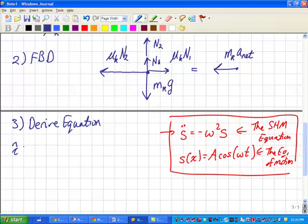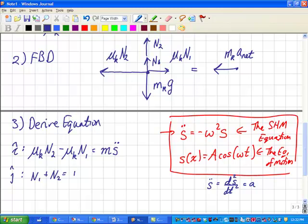In the i-hat direction, we end up getting that μₖN₂ subtract μₖN₁ is going to equal ma. And I'm going to rewrite a as S double dot. Remember that S double dot is another way of saying the second derivative of position with respect to time, which we know is acceleration. And in the j-hat direction, we're going to end up getting that N₁ plus N₂ must equal mg, or the weight of the ruler.